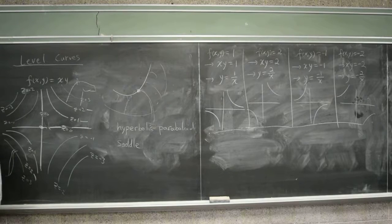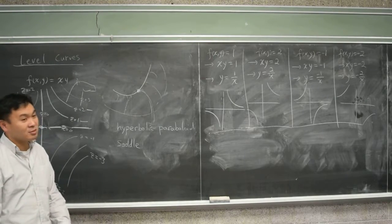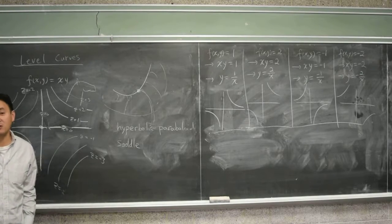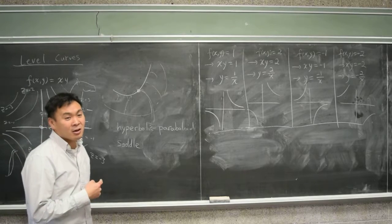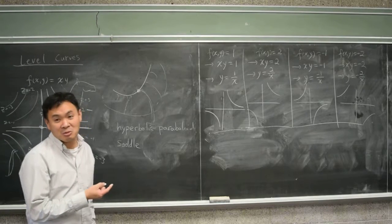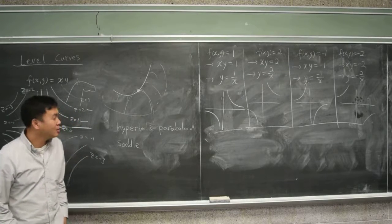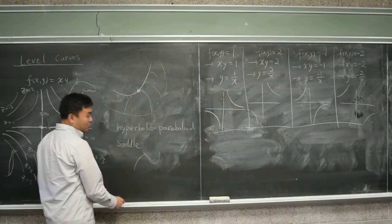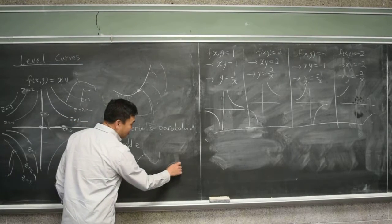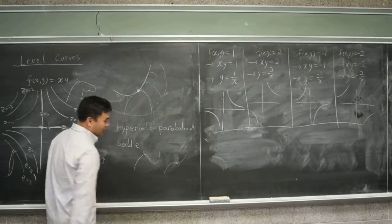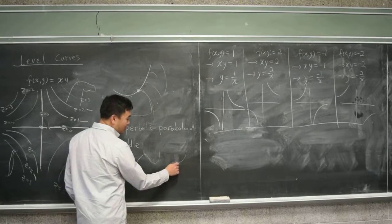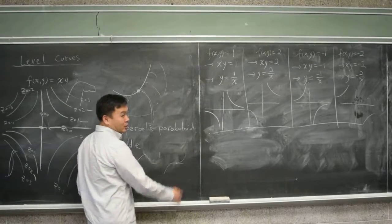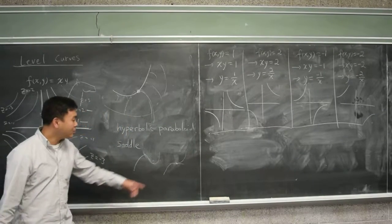That already shows us how complicated this problem of optimizing a multivariable function is. For a single variable function, finding out whether it's maximum or minimum is easy. Just figure out the critical numbers. And I mean, it could either be relative max or relative min. There was this one annoying case where it's a critical number. The derivative is zero, but it's just momentarily stopping and going off again.